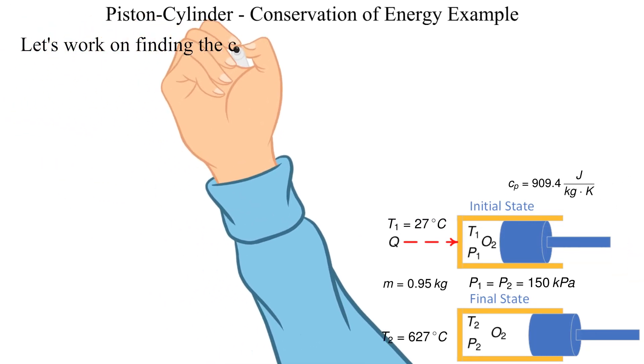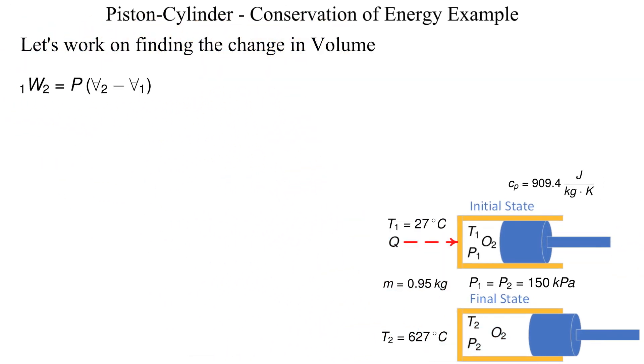We don't know the initial or final volume however we do know the temperatures at state 1 and state 2. We will use the ideal gas law to substitute the change in temperature for the change in volume. The resulting equation is shown.